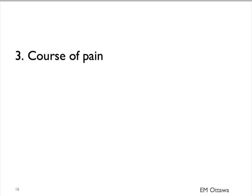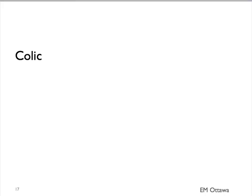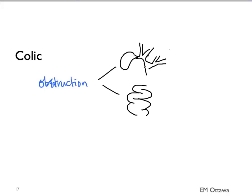The next helpful clue in the history is the course of pain. We're interested to know whether the pain is constant over time or colicky in nature. Colicky pain tends to be associated with obstruction — similar to what we've discussed, it can be obstruction in the biliary tree, the GI tract, or the urinary tract.